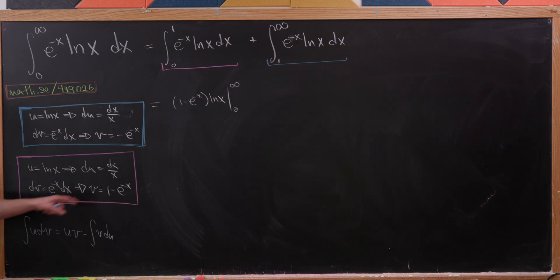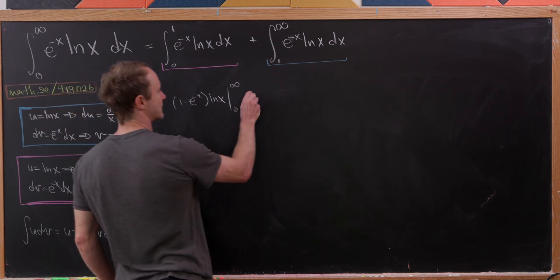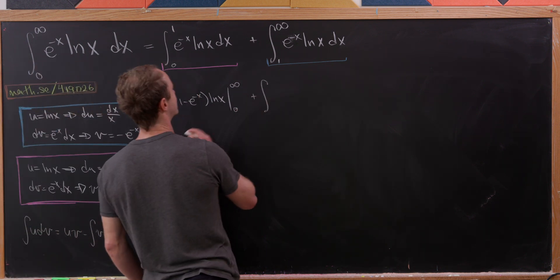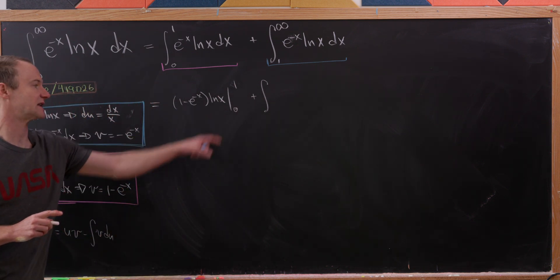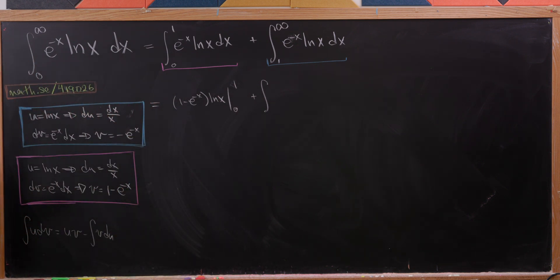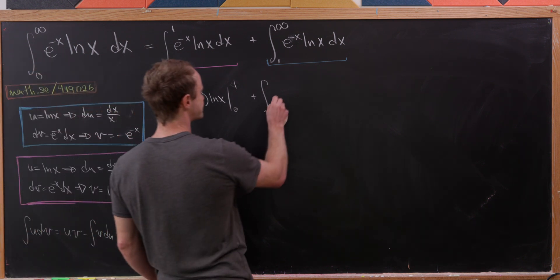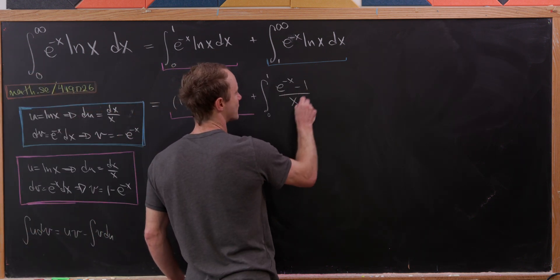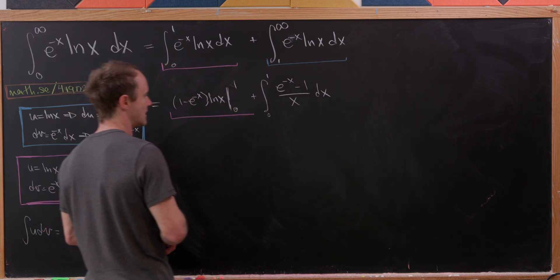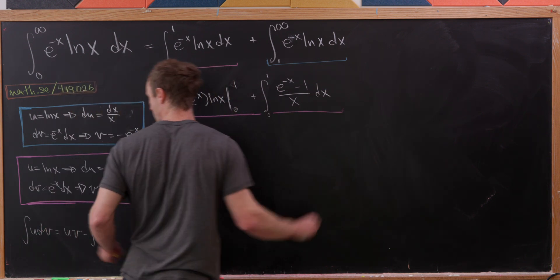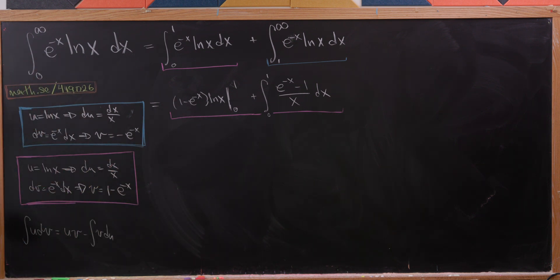Then it's minus the integral of v du. Taking the minus sign in, that gives us plus the integral from zero to one — and we have to take a limit at the zero part — of (e to the minus x minus 1) over x, dx. All of that comes from our magenta integration by parts.